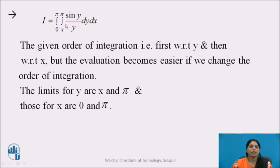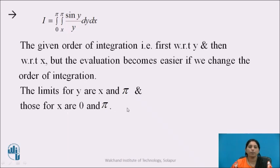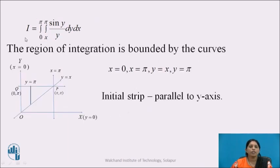Observe the limits. The inner integral is having the limits x to π — the limits are expressed in terms of x, so these are the limits of y, and the outer integral is having the limits of x. The given order of integration is first with respect to y, and then with respect to x. But the evaluation becomes easier if we change the order of integration. The given limits of y are x and π, and those for x are 0 and π.